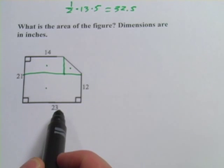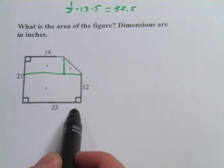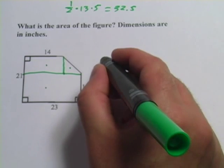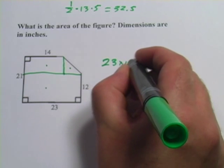This one's probably the easiest. I've got my sides here, 23 by 12, so that's part of it, 23 by 12 plus.